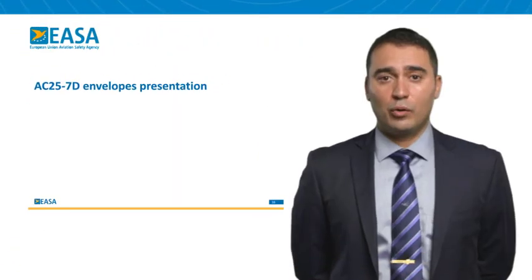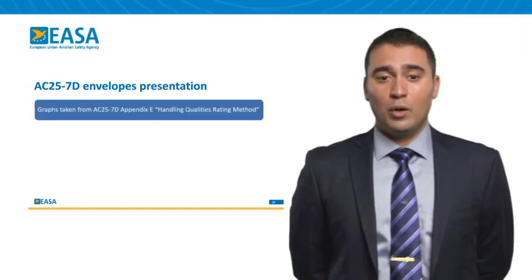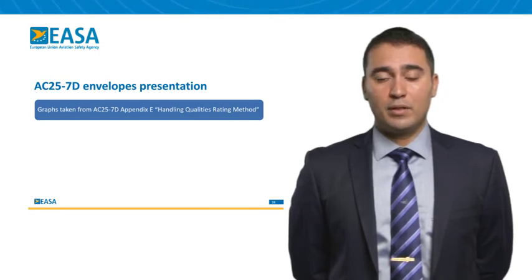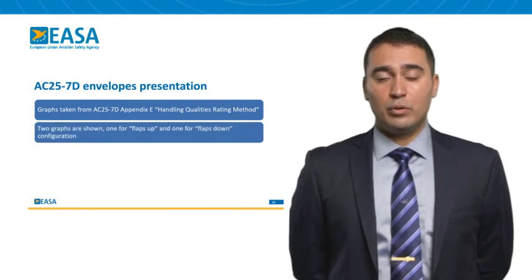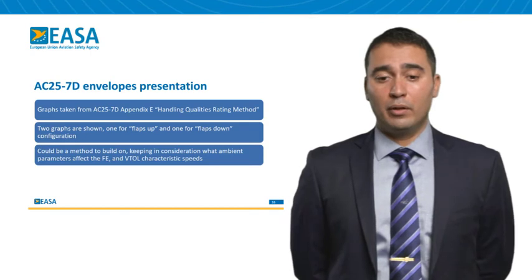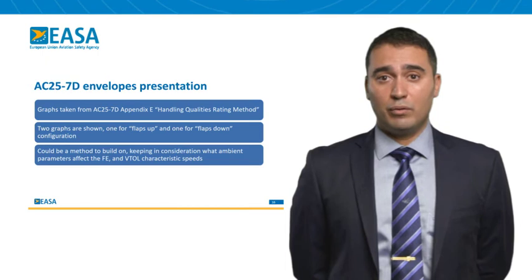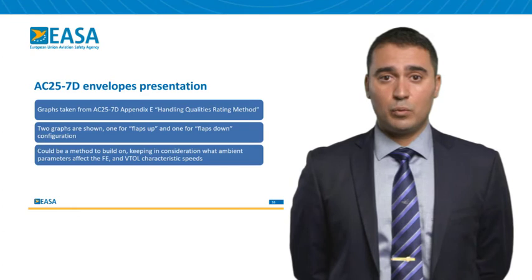In the next section we will go through the AC 2570 presentation of flight envelopes, showing some graphs taken from the handling qualities rating method — one for flaps up and one for flaps down configuration — as a possible method to build on. However, we need to consider that different ambient parameters can affect flight envelopes for VTOLs, and that VTOLs may have different characteristic speeds compared to CS25 aircraft.